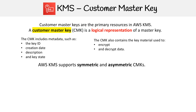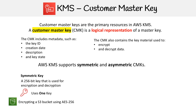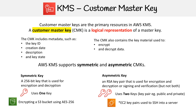KMS supports both symmetric and asymmetric CMKs. A symmetric key is generally a 256-bit key used for both encryption and decryption — you have a single key. An example on AWS is when you encrypt an S3 bucket; it uses AES-256, where 256 suggests 256-bit encryption and AES is the protocol for encryption.